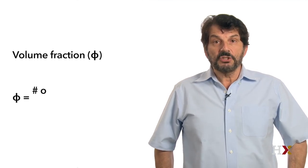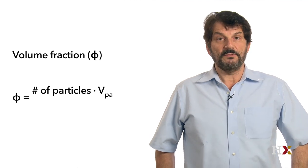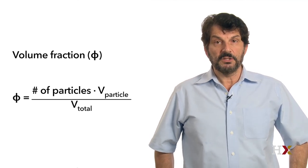The simplest way to understand this is to think of particles in the fluid. When the fluid flows, the particles also flow, and they have to flow over one another for the whole fluid to flow. The way they behave depends on the concentration of particles — specifically the volume fraction, which is the volume the particles occupy in the fluid. We calculate it by taking the total number of particles times their individual volume, divided by the total volume of the fluid.